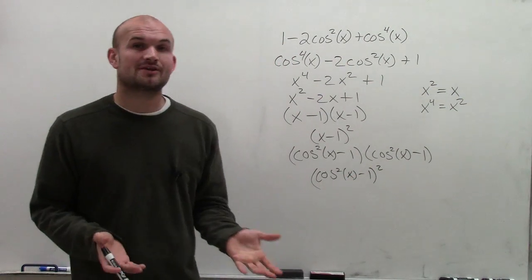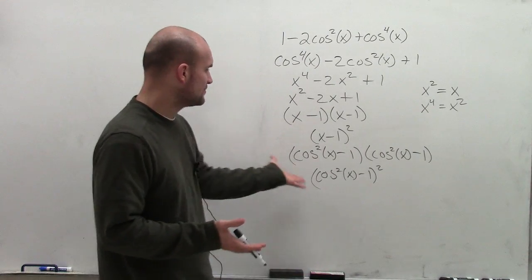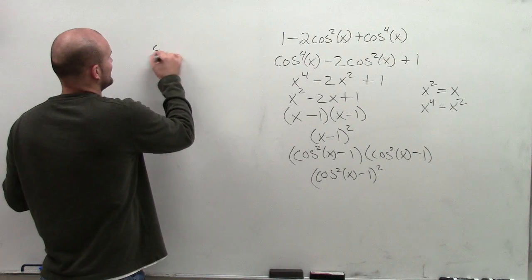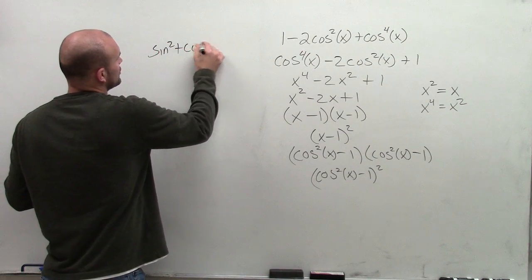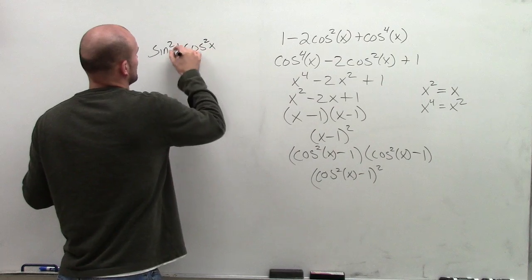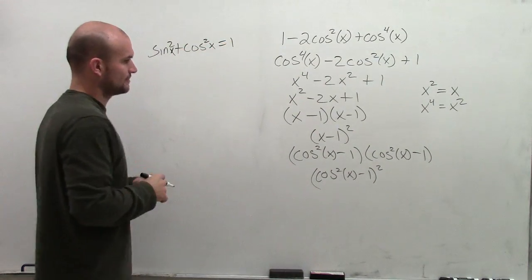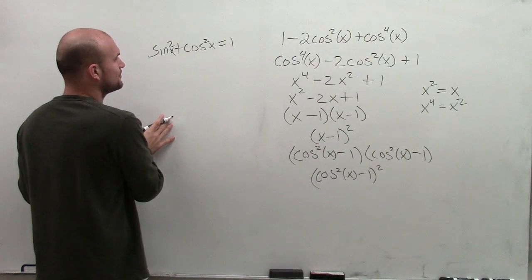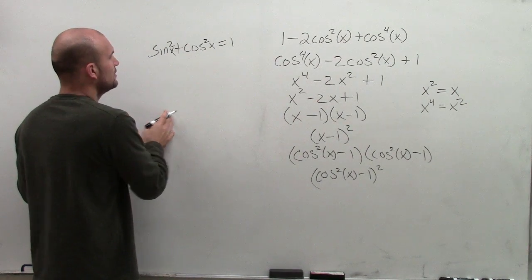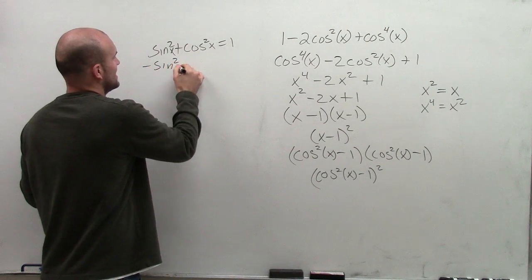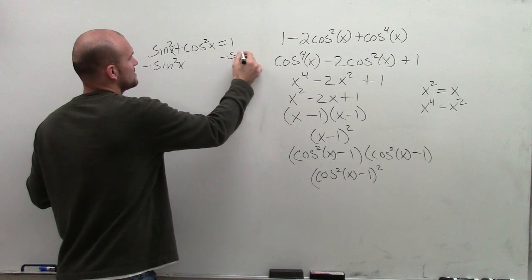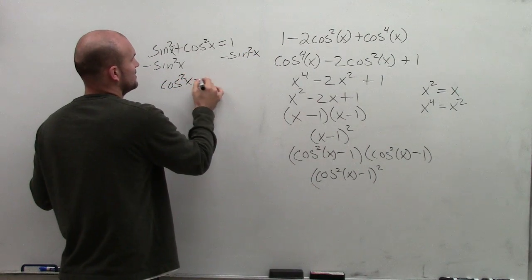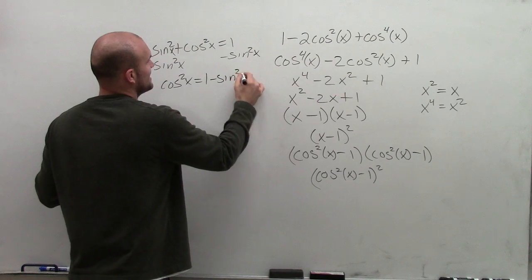Now, by using my Pythagorean identities, how can I rewrite cosine squared of x minus 1? I know that sine squared plus cosine squared of x equals 1. So if I solve this by subtracting sine squared of x on both sides, I get cosine squared of x equals 1 minus sine squared of x.